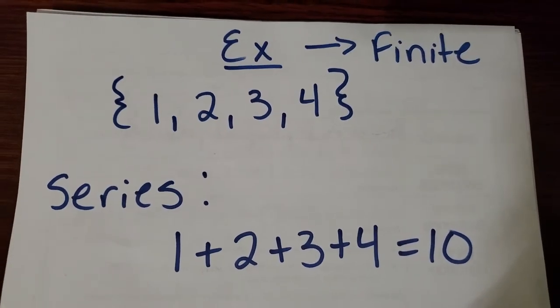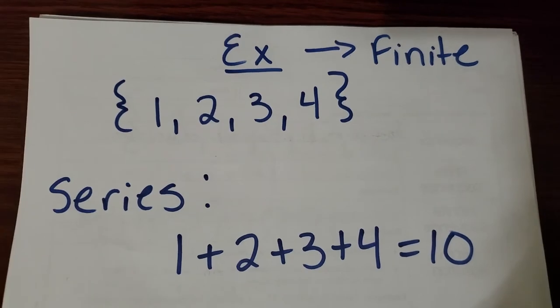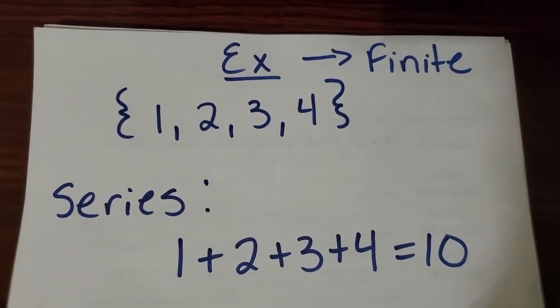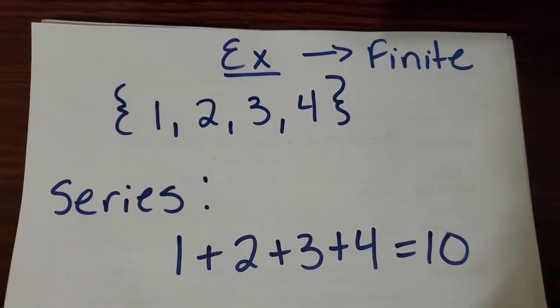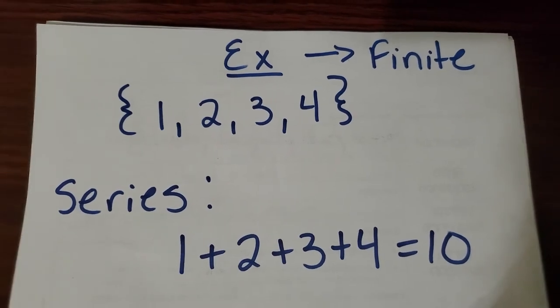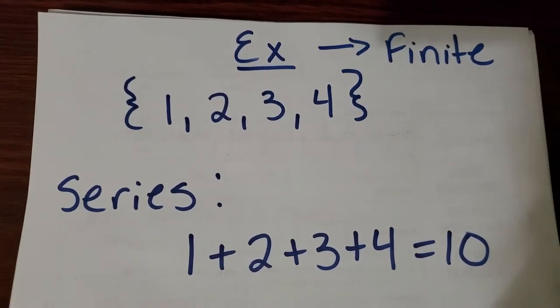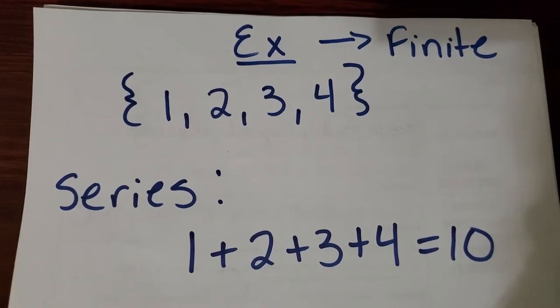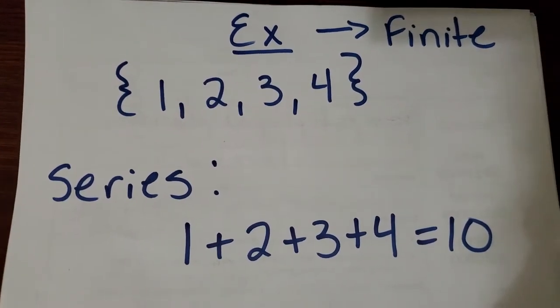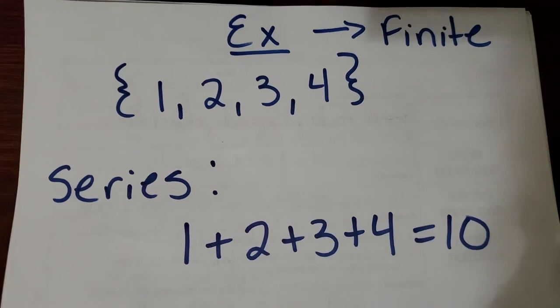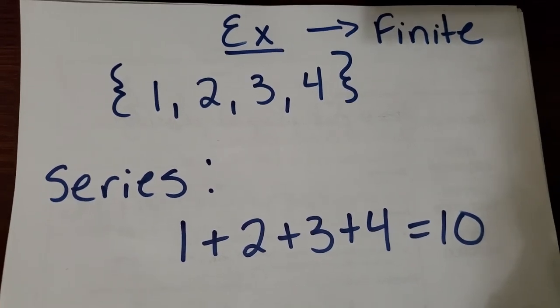Let's look at this sequence that has a finite amount of terms, and finite simply just means that it has a number of terms that you can count. The sequence is 1, 2, 3, 4. So to find the series, you would just add up the four terms and 1 + 2 + 3 + 4 gives you a sum of 10.